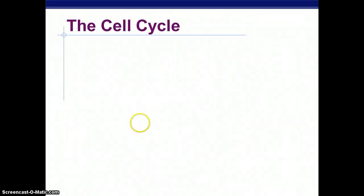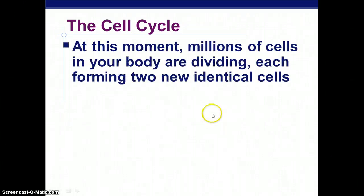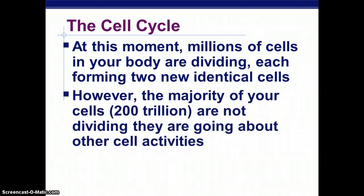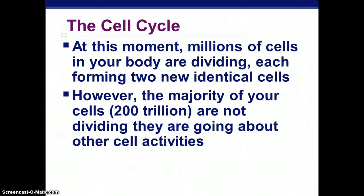In our cell's life, cells go through a cell cycle. At this moment, millions of your cells in your body are dividing. However, the majority of them — about 200 trillion — are not dividing. They are going about whatever they are supposed to do, busy being your liver cell, your stomach cell, or your muscle cell.